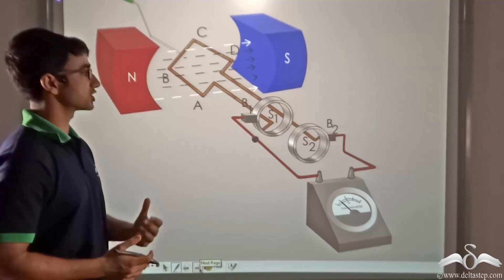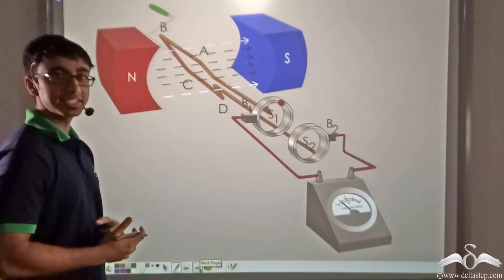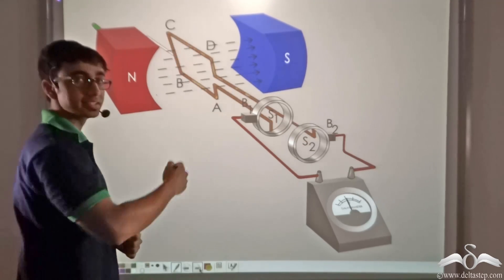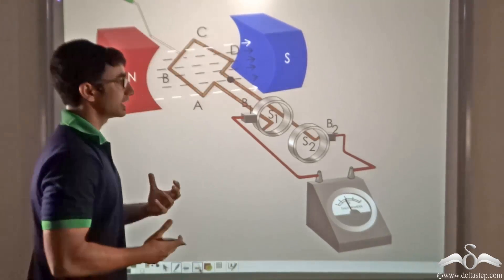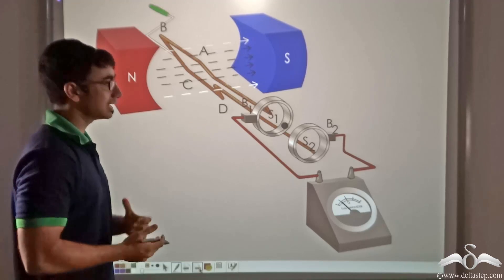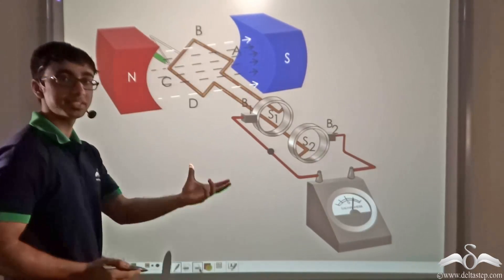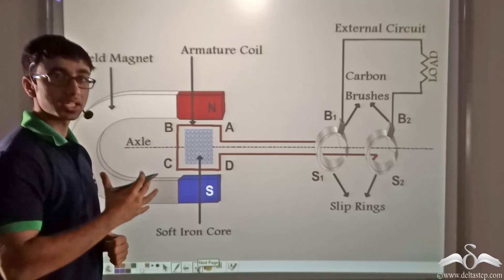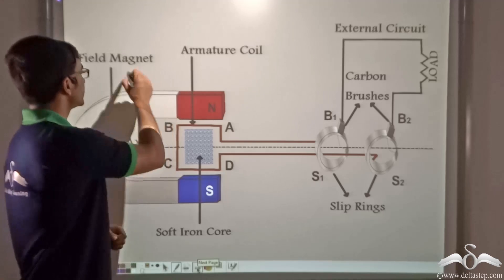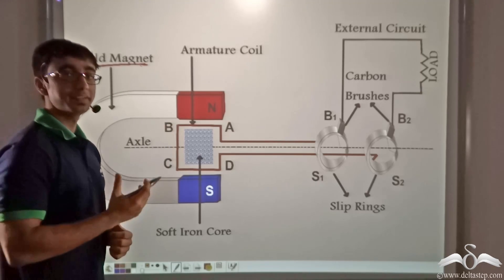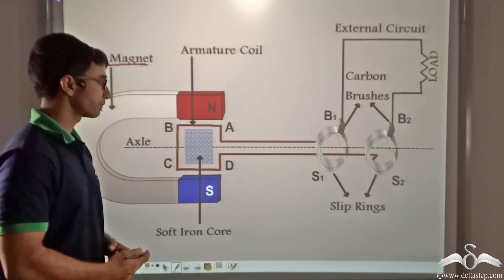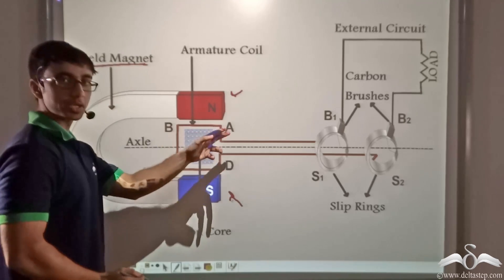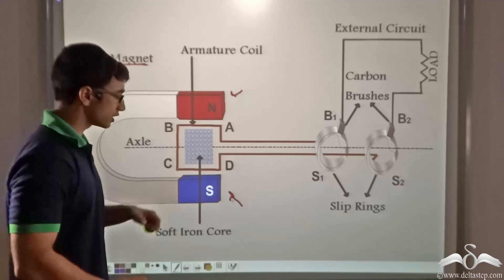Let us take a look at how a generator functions. There is a coil ABCD and at one end of the coil there is a handle. Once this handle is rotated, we find that current starts flowing in the coil as indicated by the galvanometer. Now let us study in detail how when we rotate the coil, current flows and how exactly it flows in the external circuit connected with the galvanometer. Firstly, we shall look at the arrangement of the generator, or in other words, how the different parts of a generator are constructed. We have what is known as a field magnet, which is usually a very strong permanent magnet. Within the poles of the field magnet, we have placed the armature coil ABCD. This armature coil is usually wound around a soft iron core.